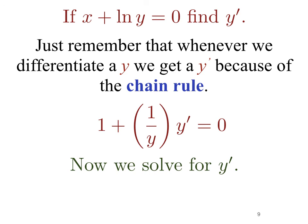Now we need to solve for y prime. To do this we'll multiply each of the terms by y. Doing that we get that y plus y prime, because the y and the 1 over y cancel, equals 0. Rearranging, y prime equals negative y. In our next videos we'll look at some more examples.